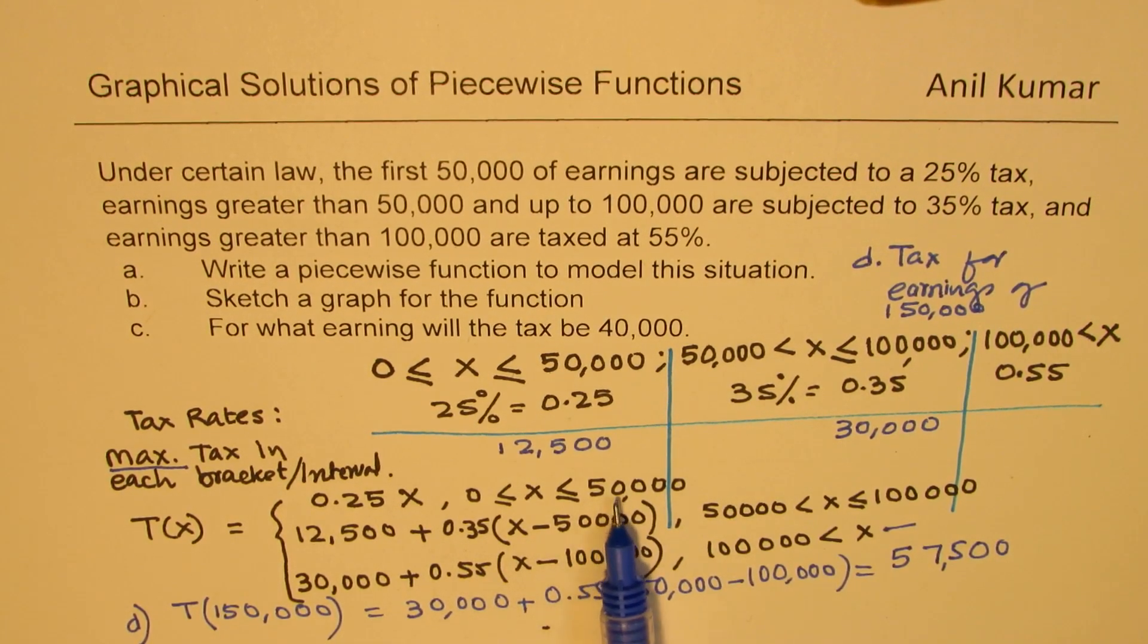With this function, we can actually calculate tax for any amount. If you have an amount which is 75,000, then you'll use this piece. And if the earning is less than 50,000, let's say 40,000, then we multiply it by 0.25 to calculate the tax. So that is the piecewise function which can help you calculate the tax for the given facts.